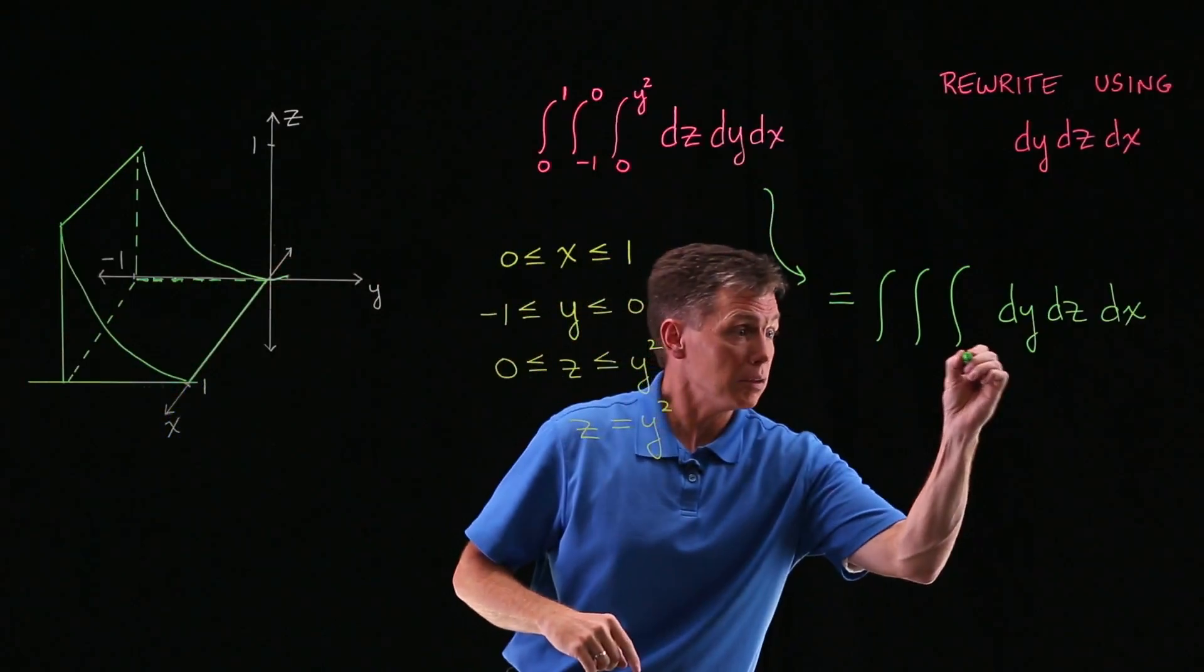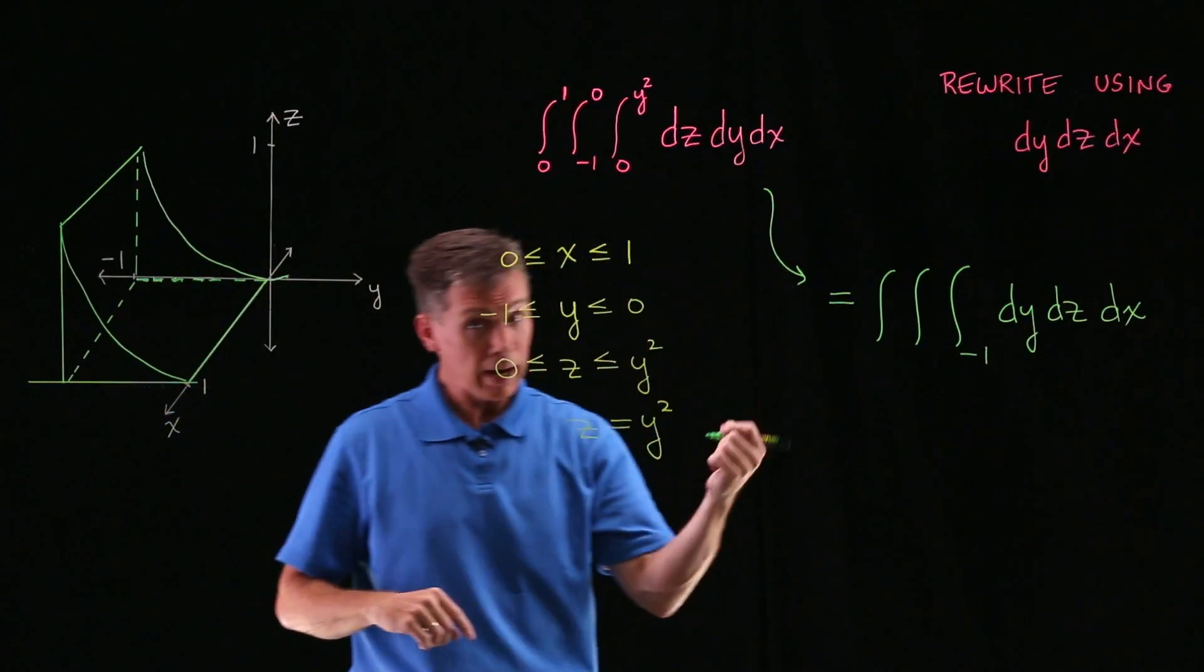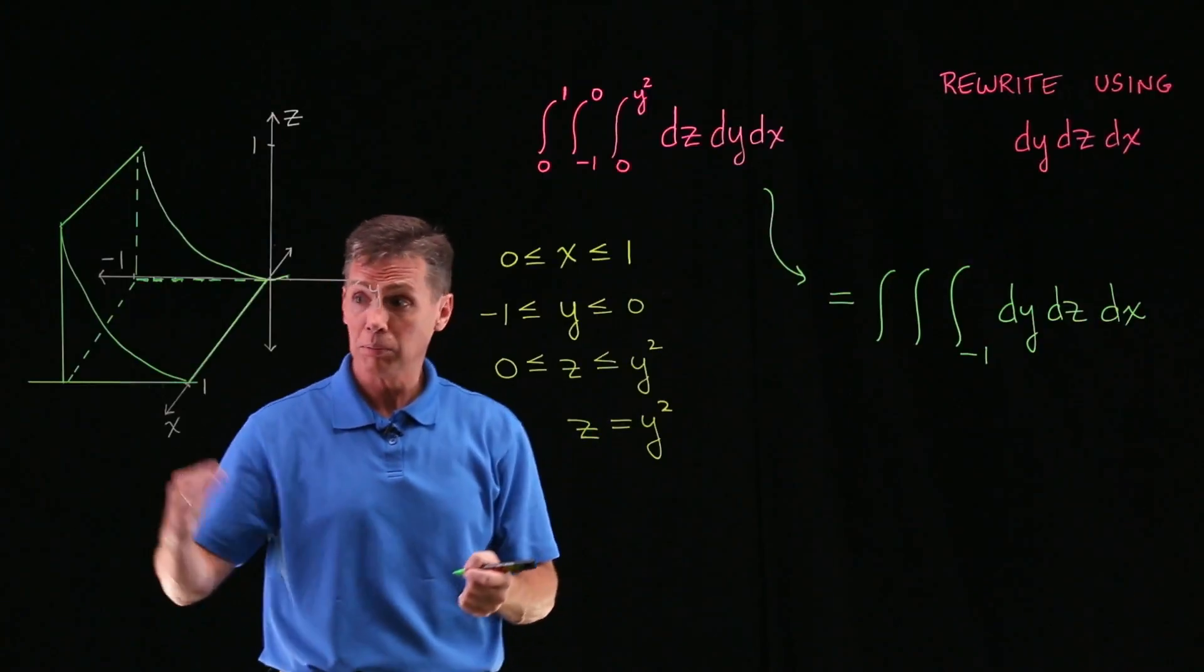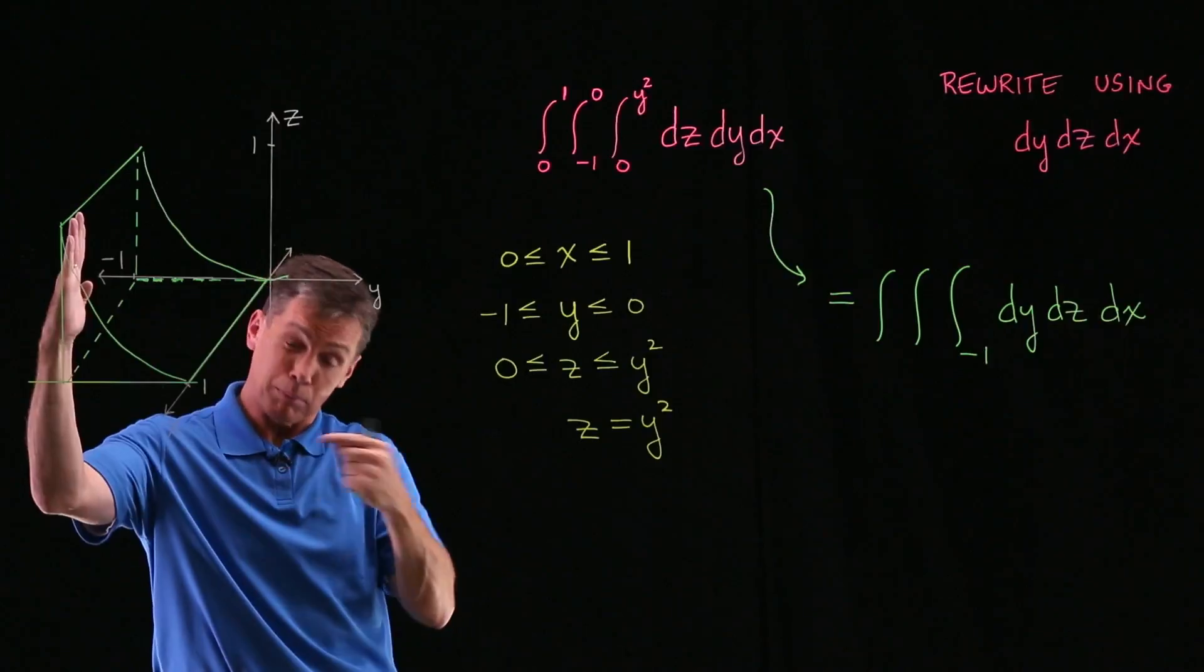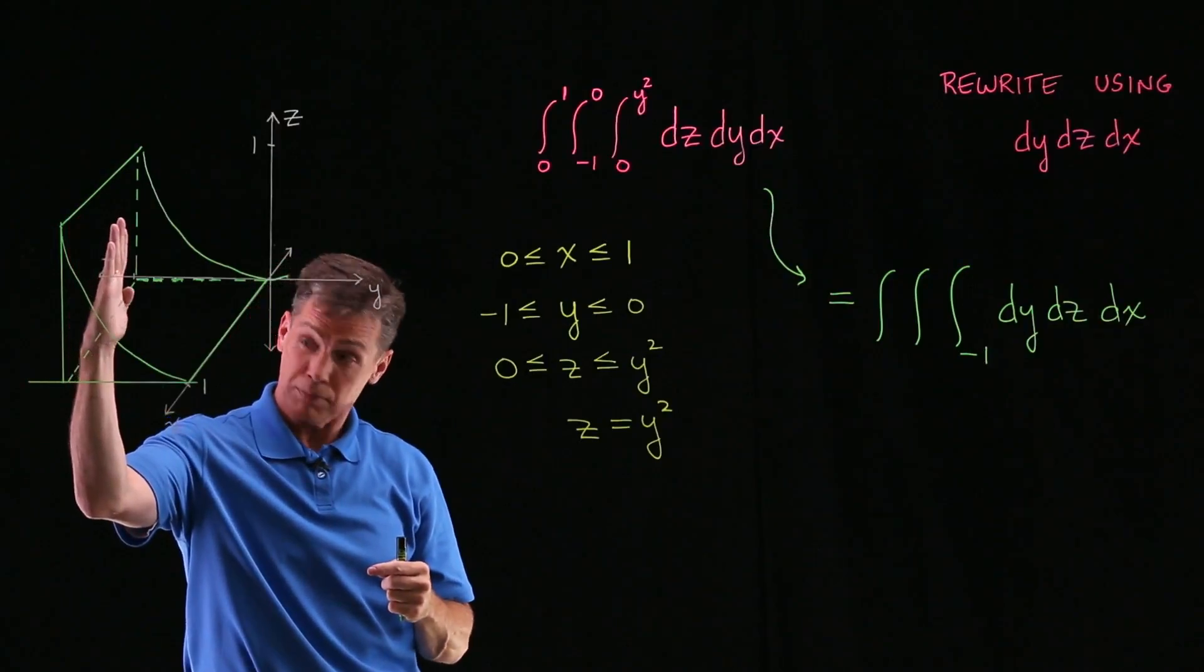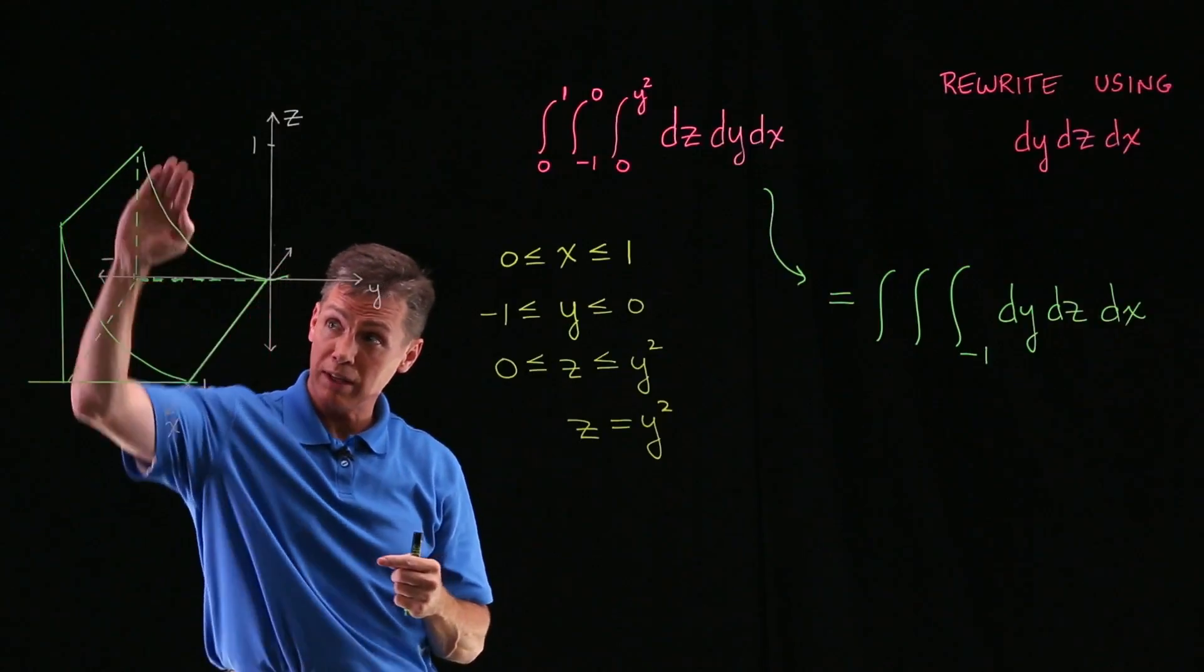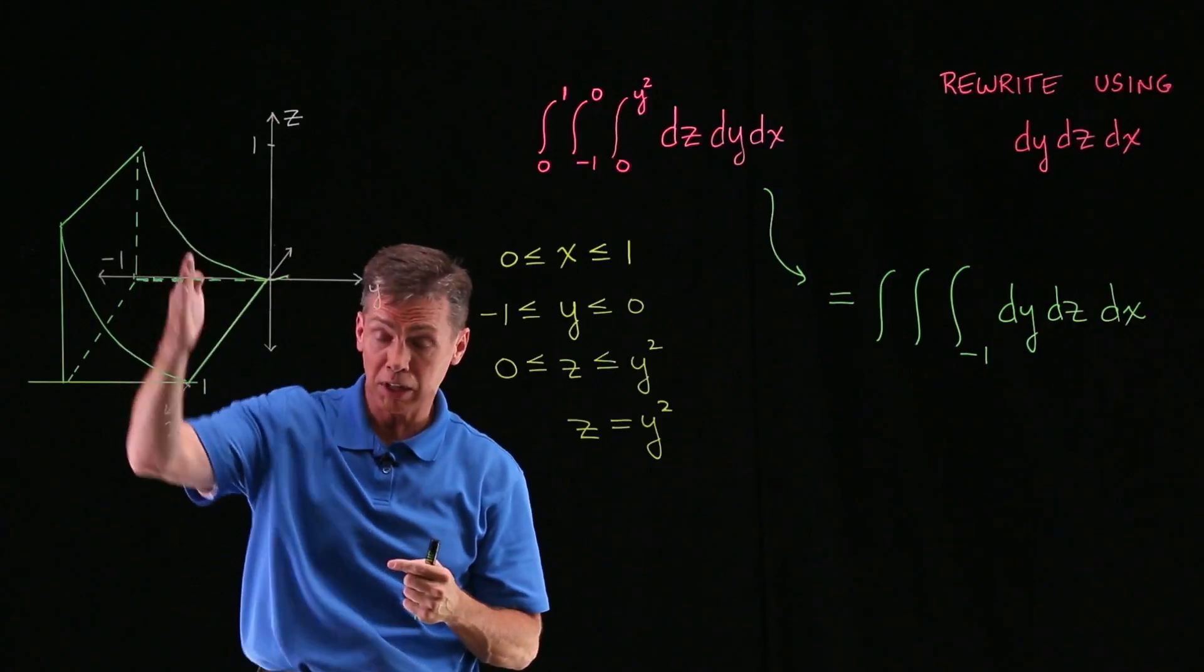Come over here, negative 1. How high does it go? It's going to be your upper limit. If you're looking at your y-axis, I'm trying to go in the positive direction. And what I'm going to hit first is that sloped part of the skateboard ramp.